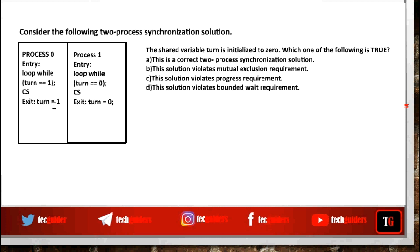p0 sets turn equals 1, giving a chance to process 1. And as long as turn equals 0, p1 cannot enter the critical section. Whenever turn equals 1, p1 can enter the critical section. While exiting, it sets turn equals 0, giving a chance to process 0.